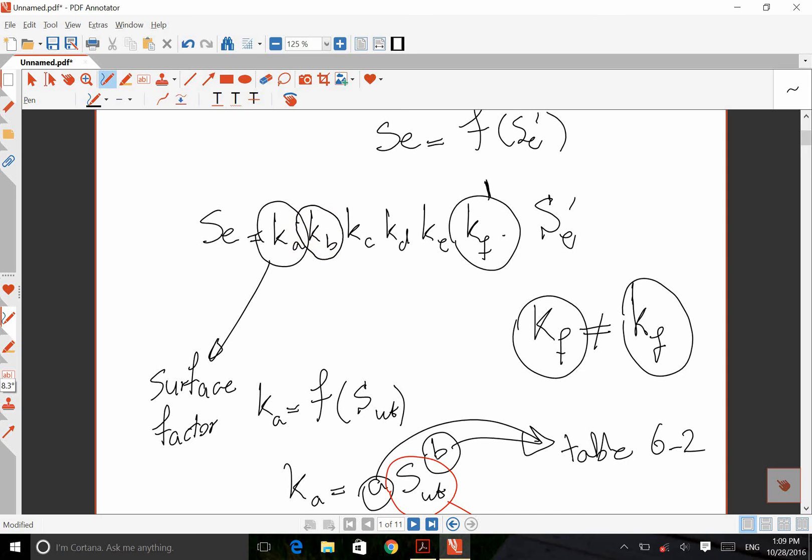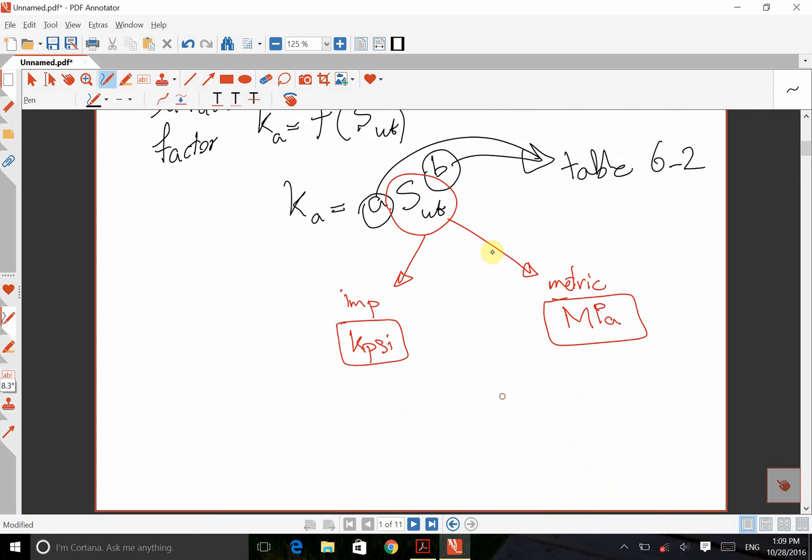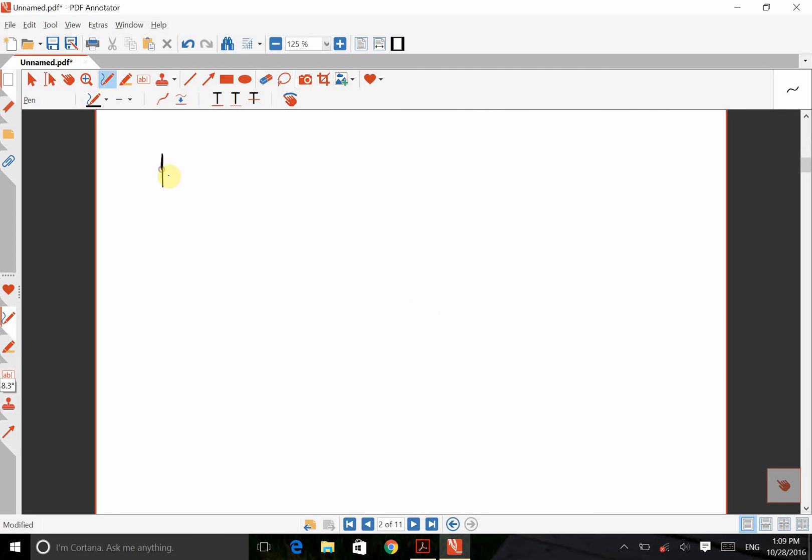I'm going to talk about KB after. Before I want to talk about KB, I want to talk about KC, this one. This is called loading factor. So loading factor should be somehow related to the loading of the system. We can have three different types of loading. We can have axial loading. We can have bending. And we can have torsion. If we have axial loading, KC will be 85%. If we have bending, that will be 1. And if we have torsion, that will be 59. Okay, so it all depends on the loading of the system.